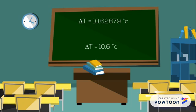We get an answer of 10.62879 degrees Celsius. We make sure we look at our significant figures to get an answer of 10.6 degrees Celsius. Now we use that number to find our initial temperature.